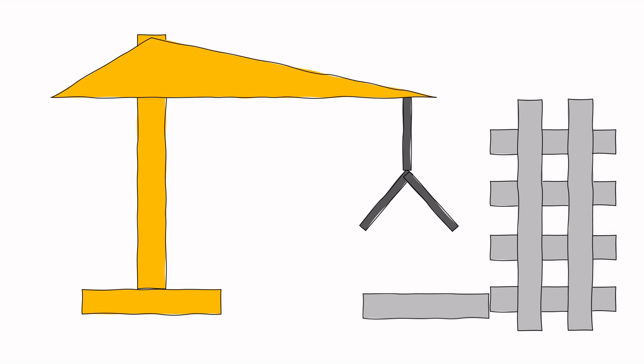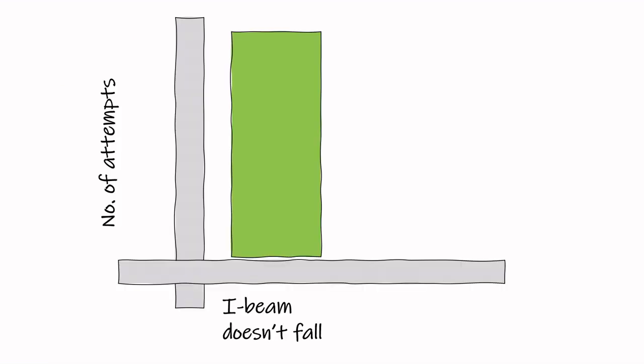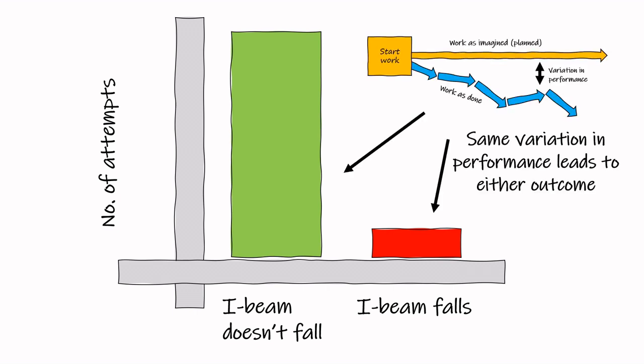But on the tenth occasion the I-beam falls. We would have nine good outcomes and one bad outcome, yet the same variation in performance — the difference between work as imagined and work as done — was present regardless of outcome. Instead of simply measuring the outcome, modern approaches to safety are increasingly focusing on measuring and learning from these variations in normal work directly.